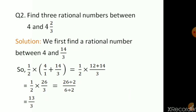Second question: find 3 rational numbers between 4 and 4 and 2 by 3. 4 and 2 by 3 is a mixed fraction which has to be converted into an improper fraction. So the first thing we will do is find one rational number in between 4 and 14 by 3, applying the same procedure as before. That is, half into 4 by 1 plus 14 by 3.